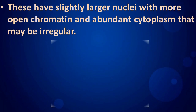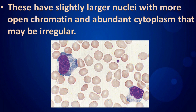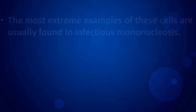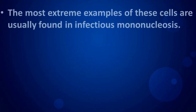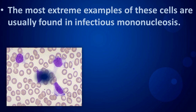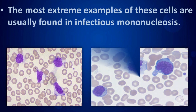These reactive lymphocytes have slightly larger nuclei with more open chromatin and abundant cytoplasm that may be irregular. The most extreme examples of these cells are usually found in infectious mononucleosis.